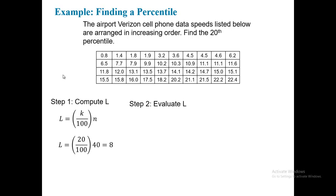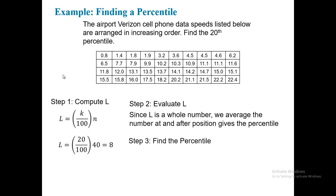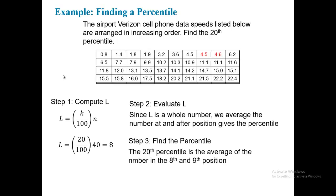Next, we'll evaluate L. Since L is a whole number, we must average the number at position L and after position L, and that will give us our percentile. We'll locate the two numbers in the 8th and 9th position, which are 4.5 and 4.6. We'll average those two together, and we have the 20th percentile is 4.55.